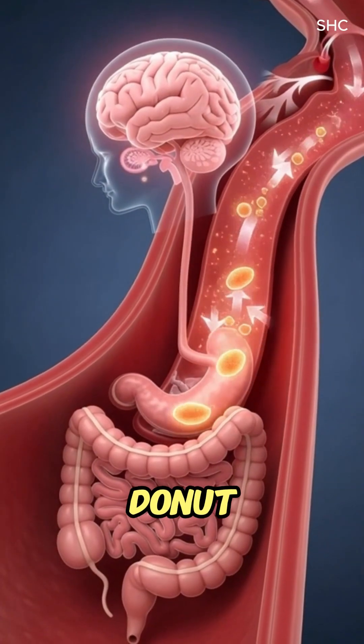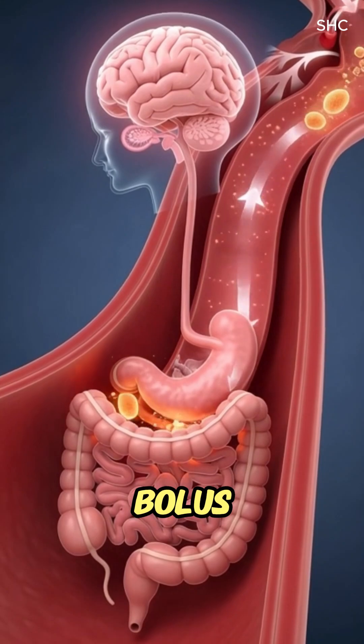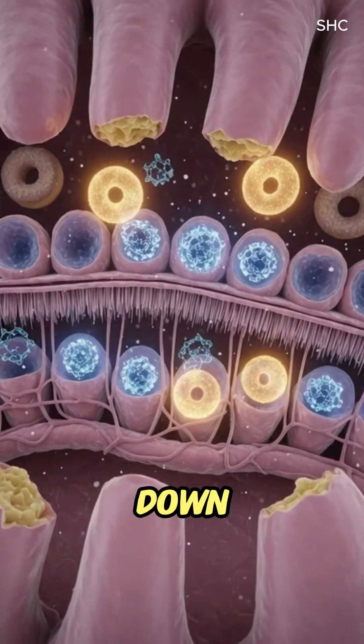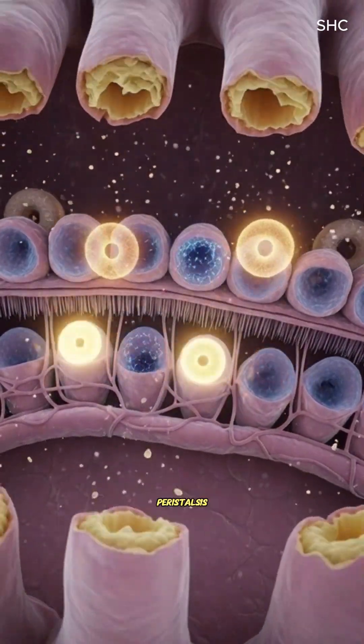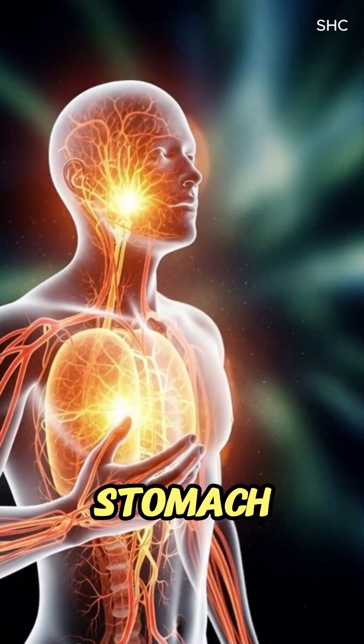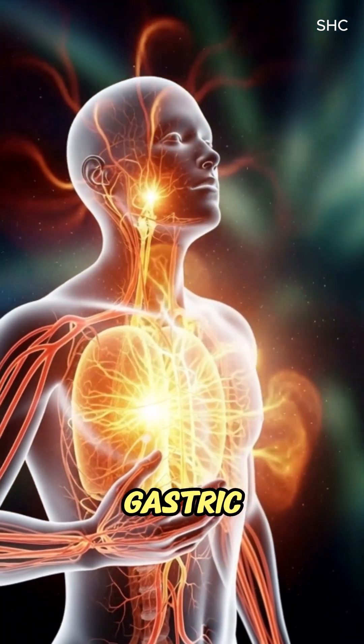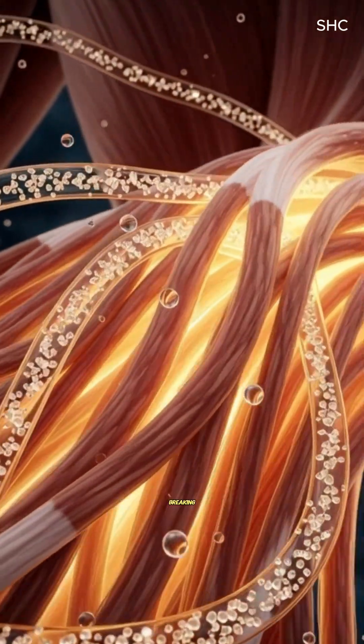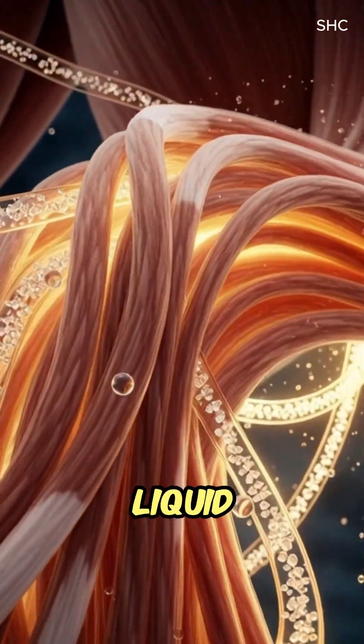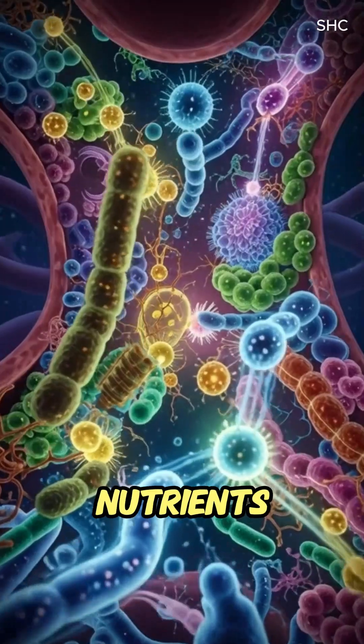The chewed doughnut forms a soft bolus that slides smoothly down the esophagus via rhythmic peristalsis into the stomach. There, gastric juices mix with the doughnut, further breaking it down into a semi-liquid chyme.